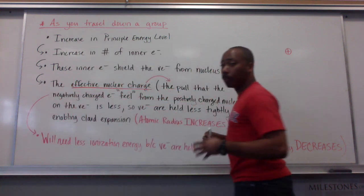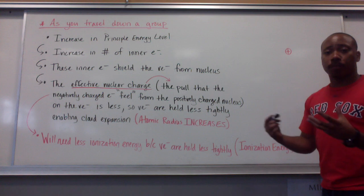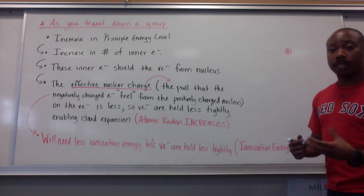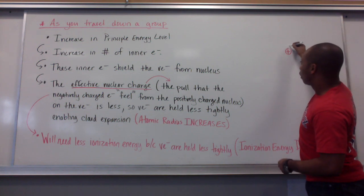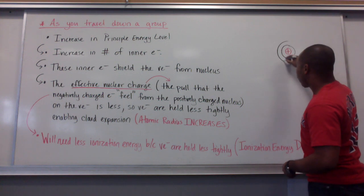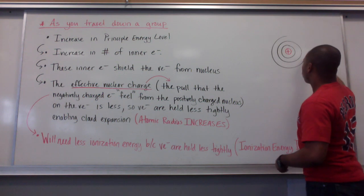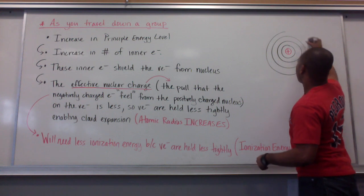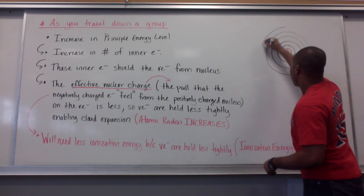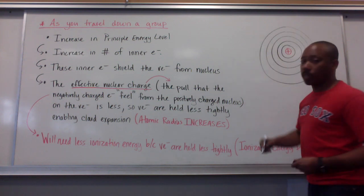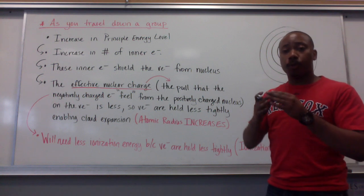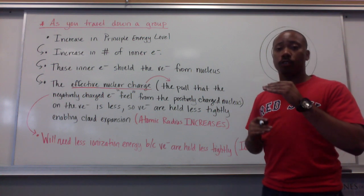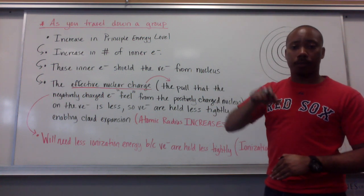We usually don't use the Bohr model anymore, but for demonstration purposes I'm going to use it now. So as I go down a group, I have my first energy level, then my second energy level, my third energy level, my fourth energy level, fifth energy level, et cetera. So as you go down a group, you increase in principal energy level as far as the elements you're going through.